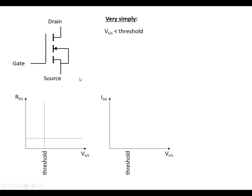Very simply, if the gate source voltage is below the threshold, then we've got infinite resistance between the drain and the source. What this means is that we've got zero current flowing between the drain and the source.